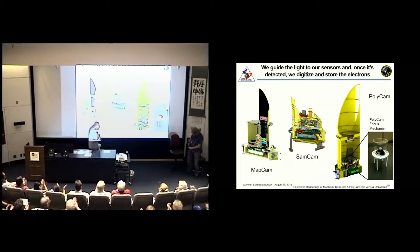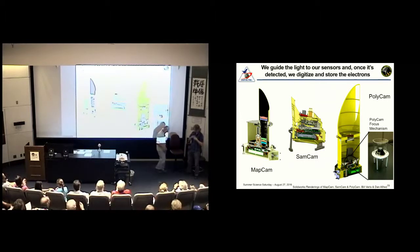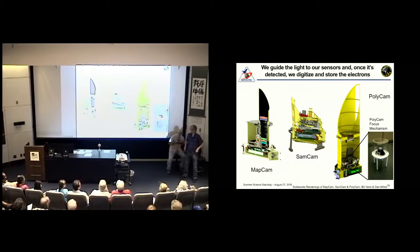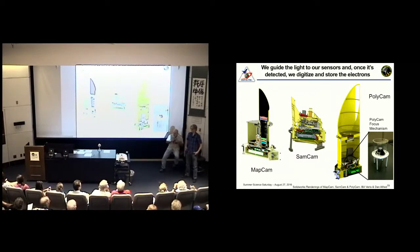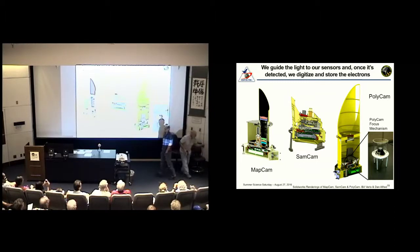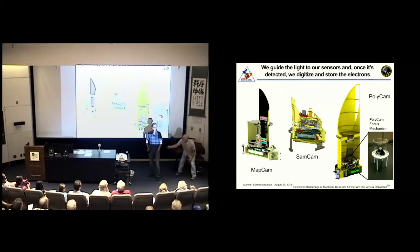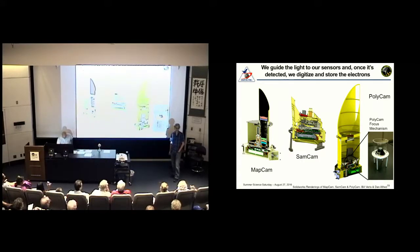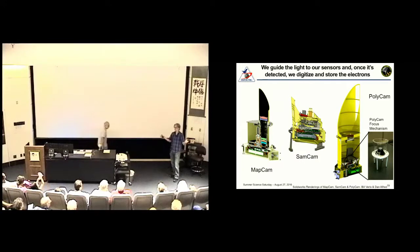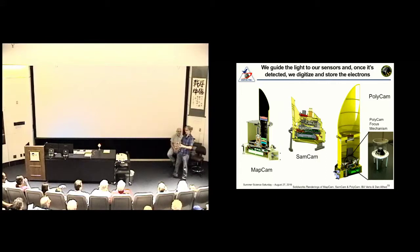Thank you. Next we've got Carl Hergenrother, who will be talking about why are we going to Bennu. Yeah, exactly. Why are we going to Bennu? As of this morning, we know of 721,000 asteroids. Now, you would think with that many objects, it would be easy to pick a target to go to. When we first started working on this mission back in 2004, OSIRIS-REx was actually the third time we had submitted a proposal to NASA to build this mission.